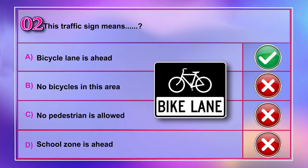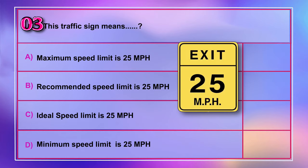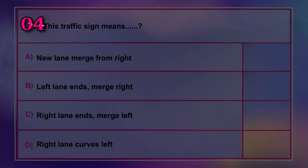Question number 3: This traffic sign means A) maximum speed limit is 25 miles per hour, B) recommended speed limit is 25 miles per hour, C) ideal speed limit is 25 miles per hour, D) minimum speed limit is 25 miles per hour. Correct answer is B: recommended speed limit is 25 miles per hour.